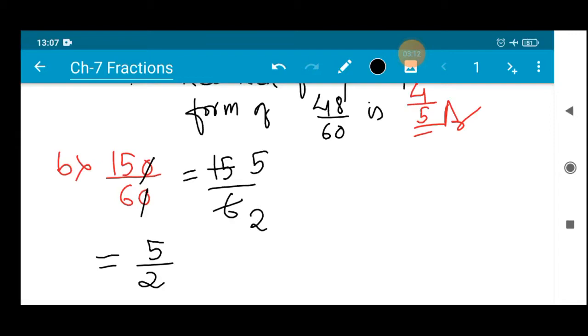Try to use the same number. Not try to use, you have to compulsorily use the same number. And the thing is you have to make it very simple. So 5 by 2 is the simplest form, simplest fractional form of 150 divided by 60.